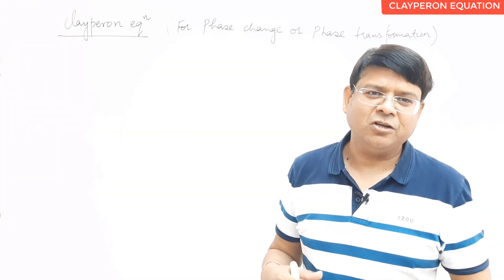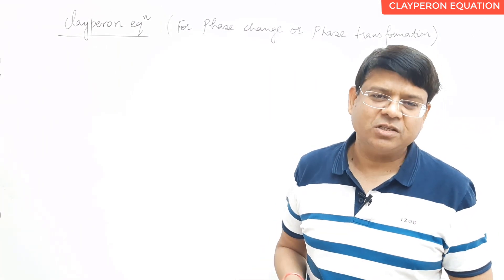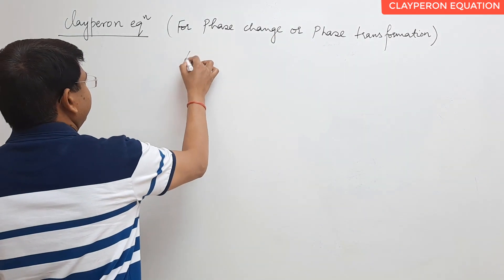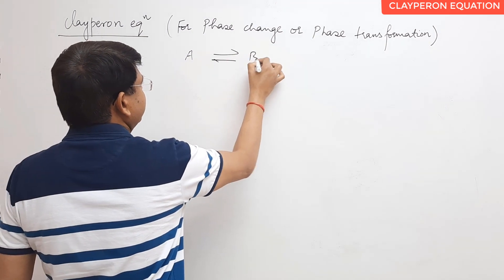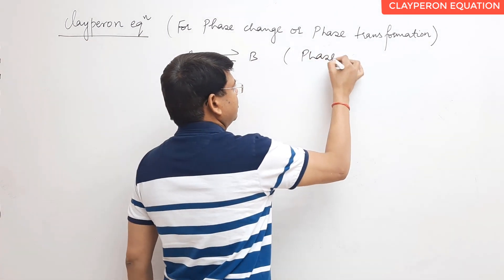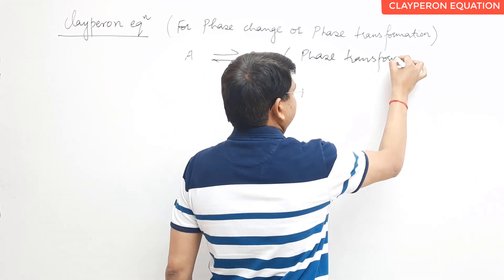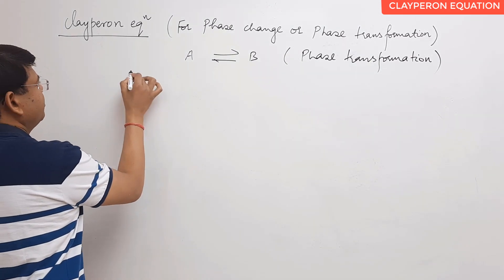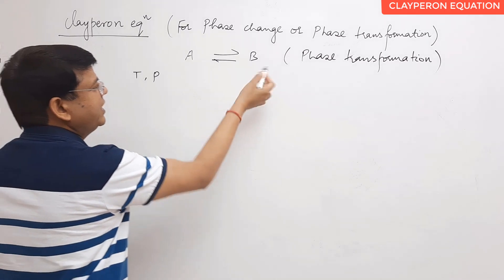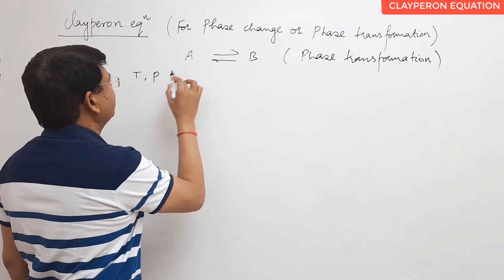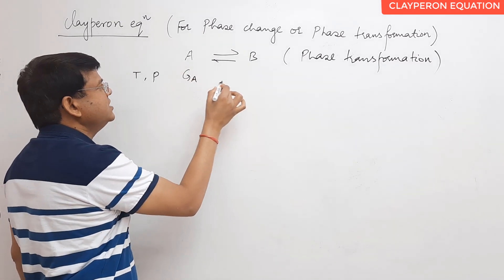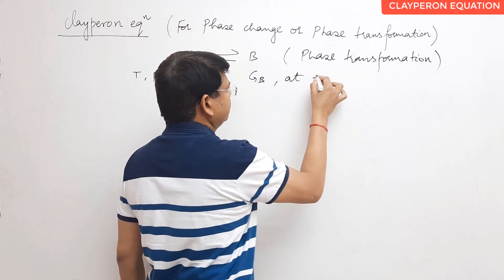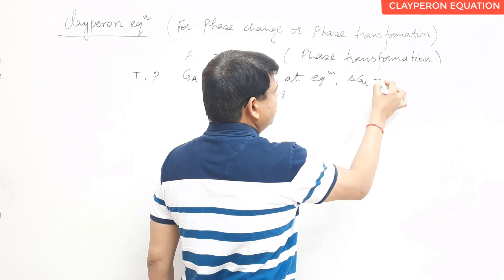The Clapeyron equation describes the variation of pressure with temperature at the equilibrium state for a phase change. For example, consider phase A converting to phase B — this is a phase transformation. At a particular temperature and pressure, equilibrium exists between the two phases. At equilibrium, the Gibbs function for A equals the Gibbs function for B, and delta G = 0, meaning G_A = G_B.